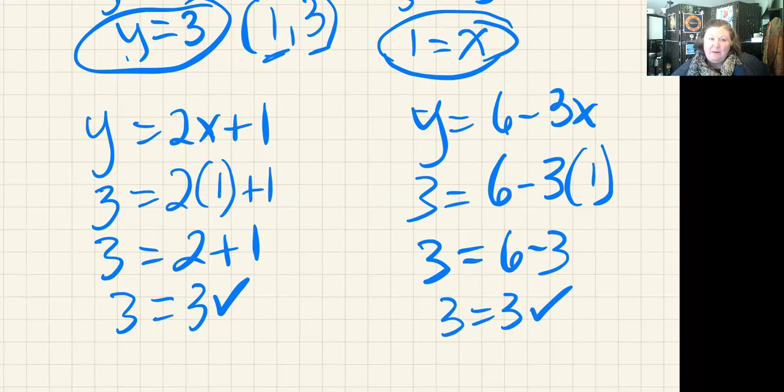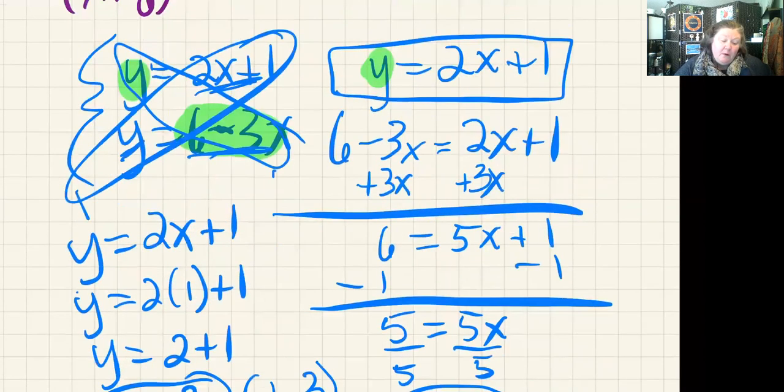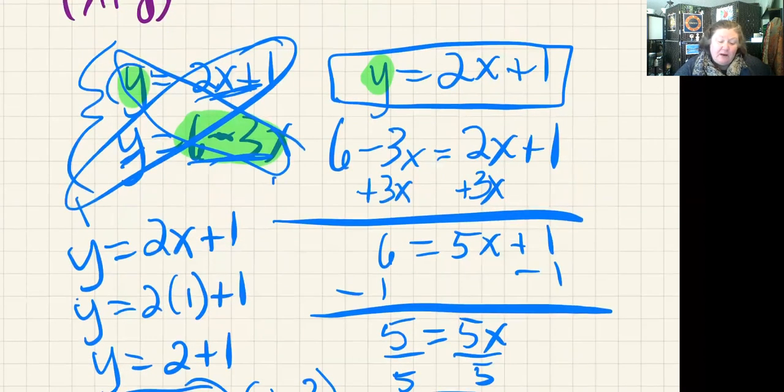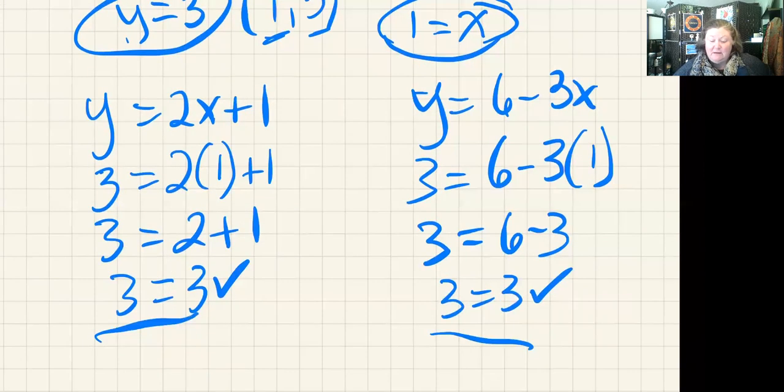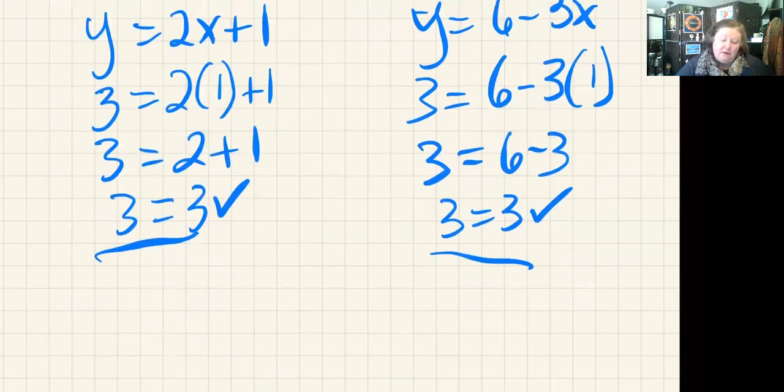In the example I showed yesterday in class, when I checked, we ended up with two different things at the end. But in this case, we ended up with exactly the same thing because y is equal to this and y is also equal to this. They really mean the same thing, so it makes sense at the very end that we end up with 3 = 3 and 3 = 3.